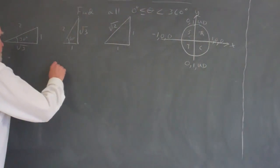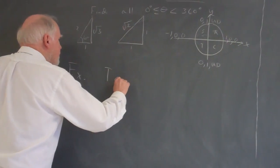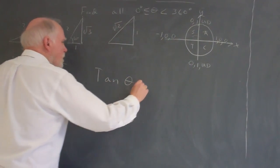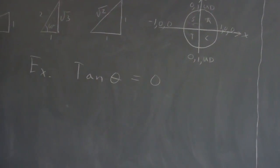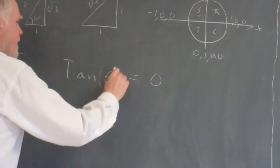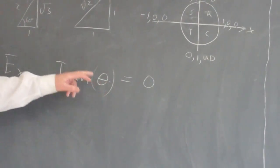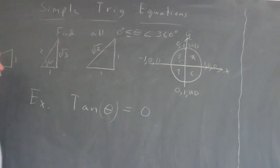The tangent of theta equals 0. So we're looking for an angle whose tangent is 0, and we're looking for all angles, such angles, that are between 0 and 360.